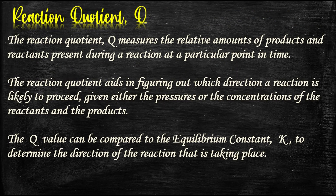Reaction Quotient Q: The reaction quotient Q measures the relative amounts of products and reactants present during a reaction at a particular point in time. The reaction quotient aids in figuring out which direction a reaction is likely to proceed, given the pressure or concentration of the reactants and products. The Q value can be compared to the equilibrium constant K to determine the direction of the reaction taking place.